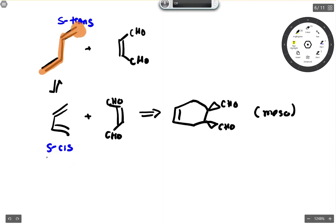So in this example, your S-cis reacts with this dienophile, and it results in us getting this for our product, which is a meso product, so it's your only product.